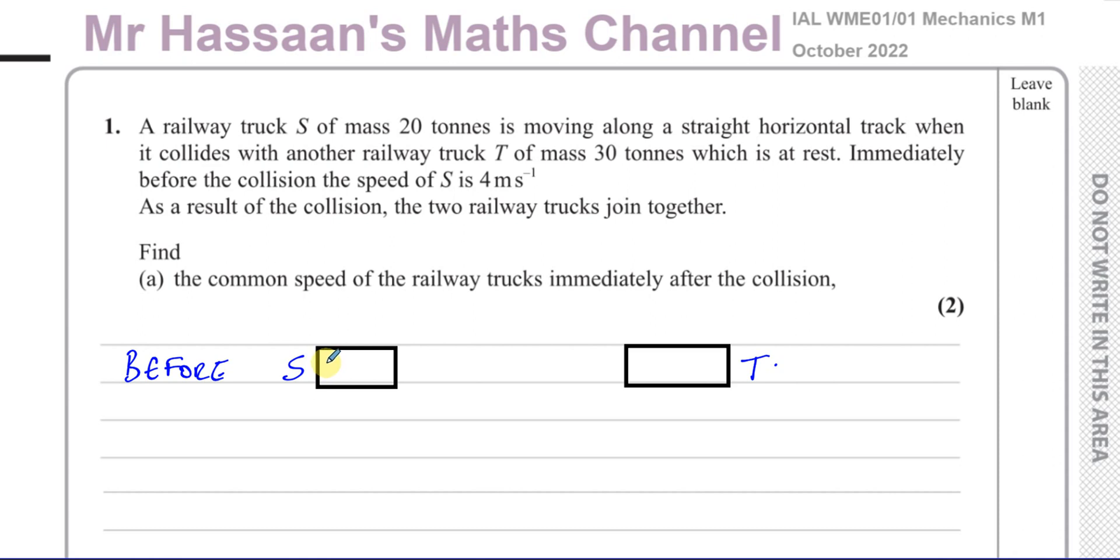So 20 tonnes, that's 20,000 kilograms. I'll just write 20 tonnes for now. 20 tonnes, and this is 30 tonnes. Before the collision, this is moving at a speed of 4 metres per second in this direction. And this is stationary.